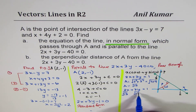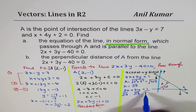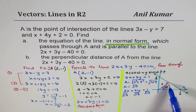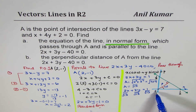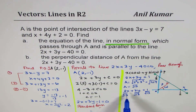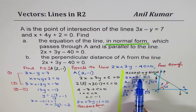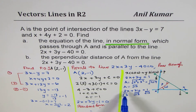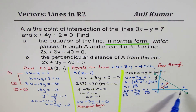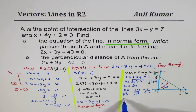Dividing the equation 2x plus 3y equals 1 by square root of 13 gives us the normal form. The distance from the origin to the line is 1 over square root of 13. This equation also tells us the values of cos ω and sin ω — specifically cos ω equals 2 over square root of 13 and sin ω equals 3 over square root of 13 — which allows us to find the angle ω that the normal makes with the positive x-axis.